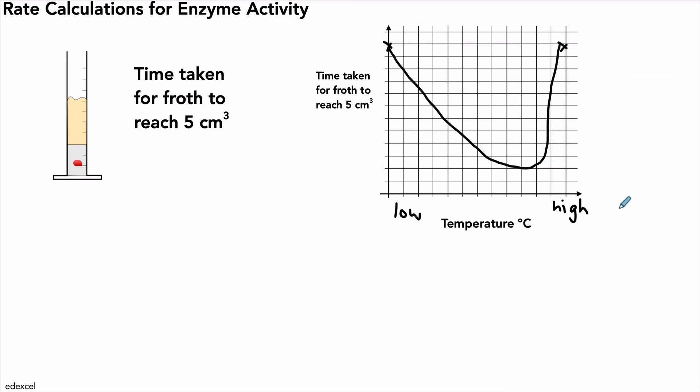In fact, if we had a very high temperature, in the region of 50 degrees C or plus, or higher than that, it might be actually too long. In fact, the time might be so long, it would be too long to measure. The reaction might not happen at all. But this quickest time here would be around about 35 degrees centigrade. And this is where it took the least amount of time to reach five centimeters cubed, because the reaction was the fastest.